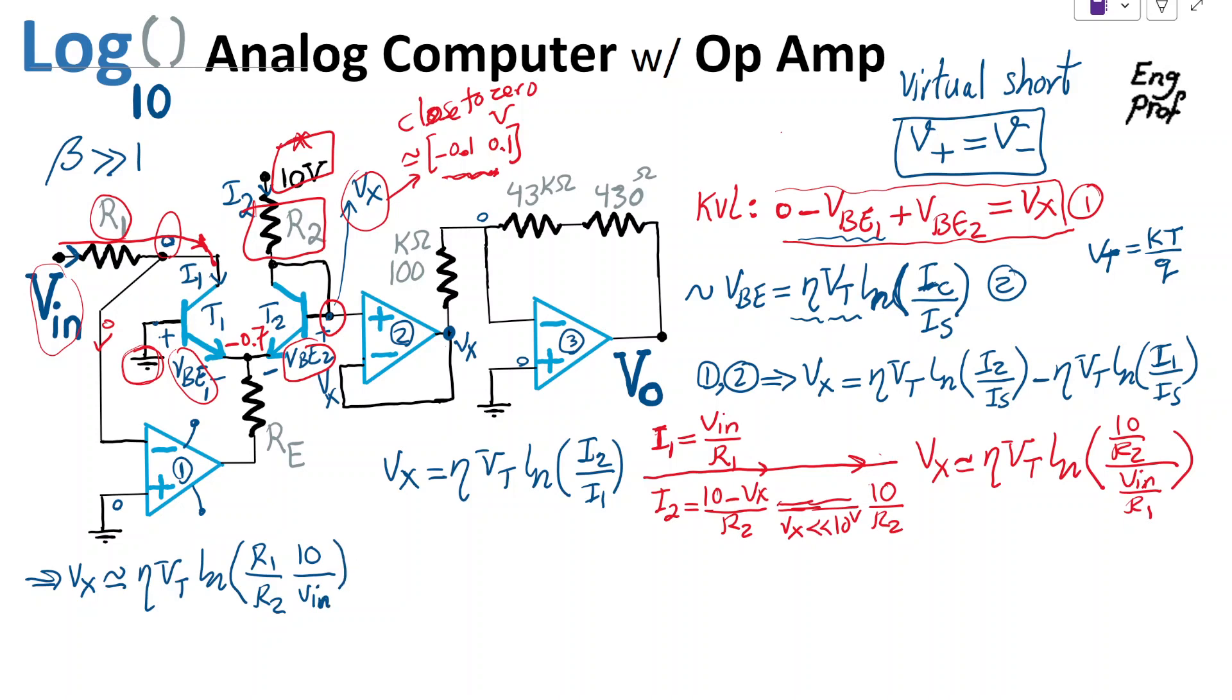We can do one very quick trick. This is the same as writing negative eta Vt because I introduce a negated version, so I need to flip the numerator denominator inside the natural logarithm. So R1 over R2 becomes R2 over R1, 10 over Vin becomes Vin over 10. As the last step, now we found Vx right at the input of the inverting amplifier.